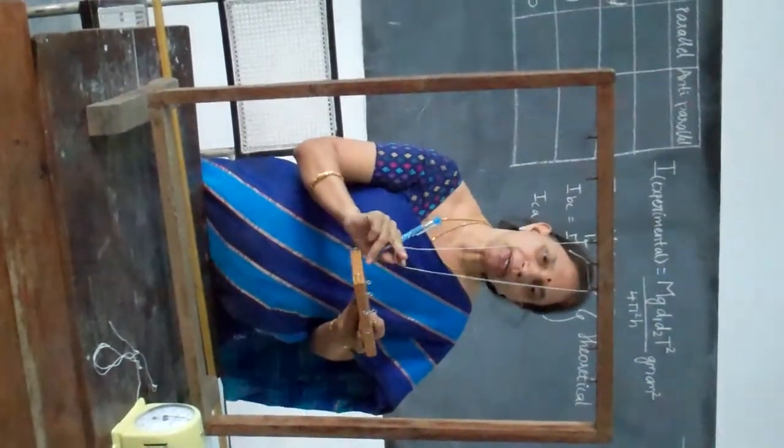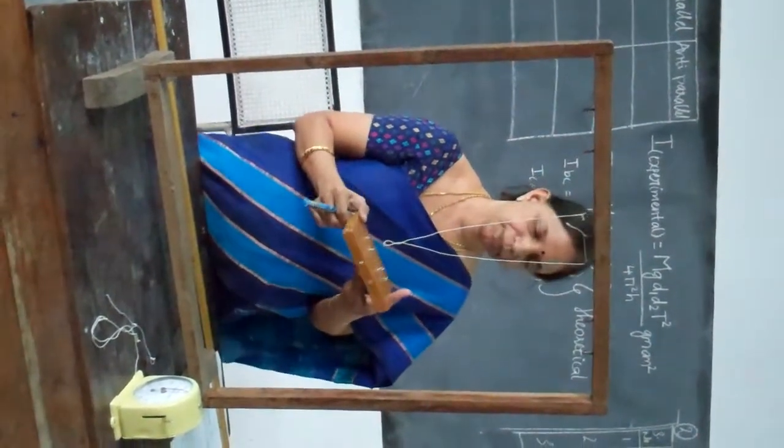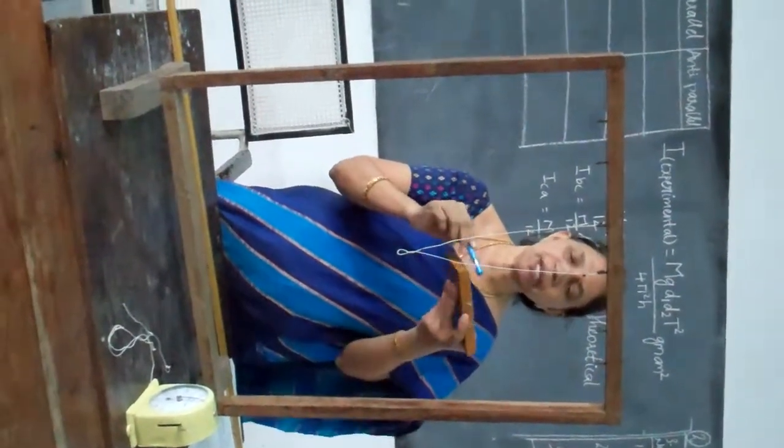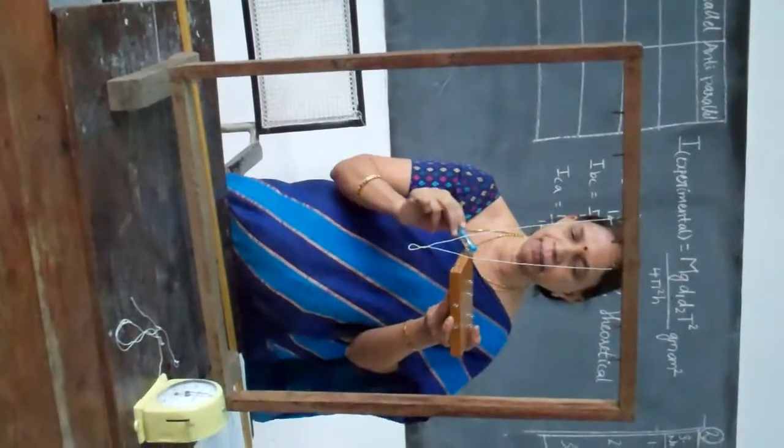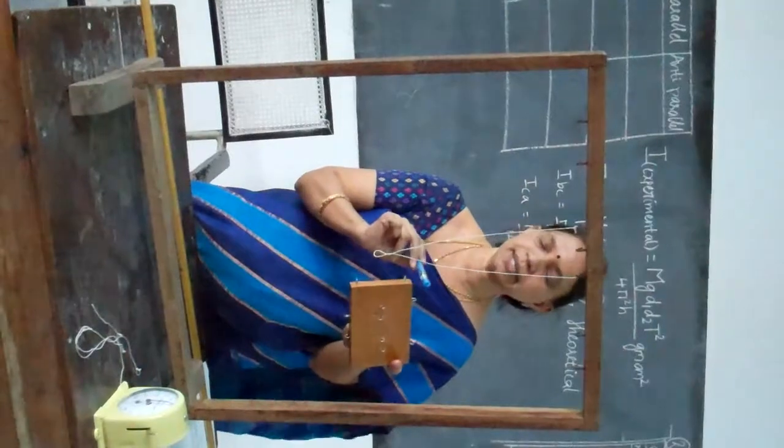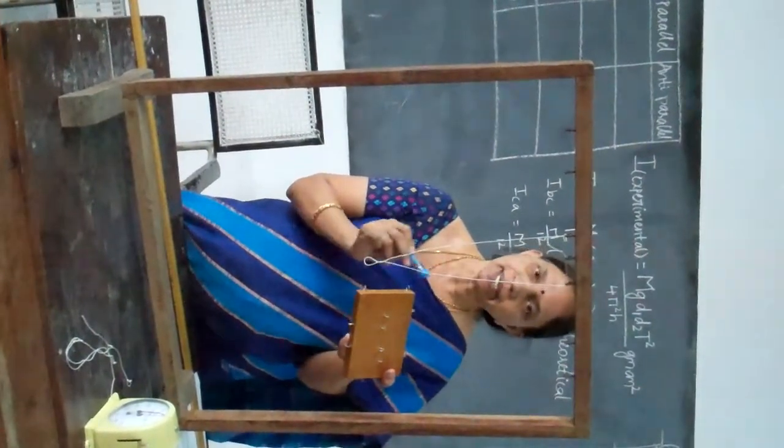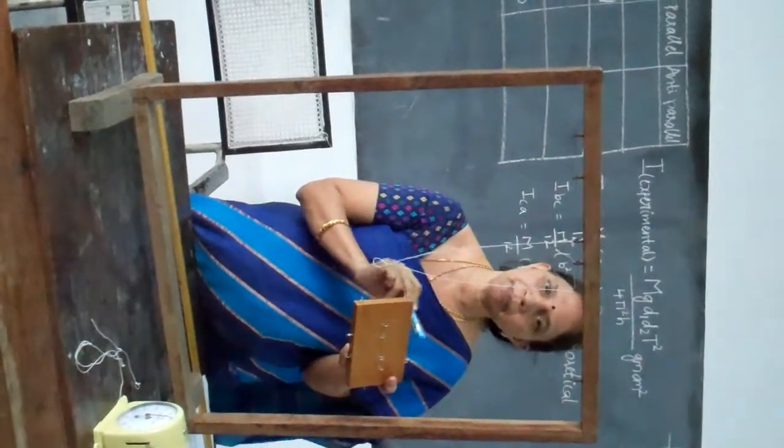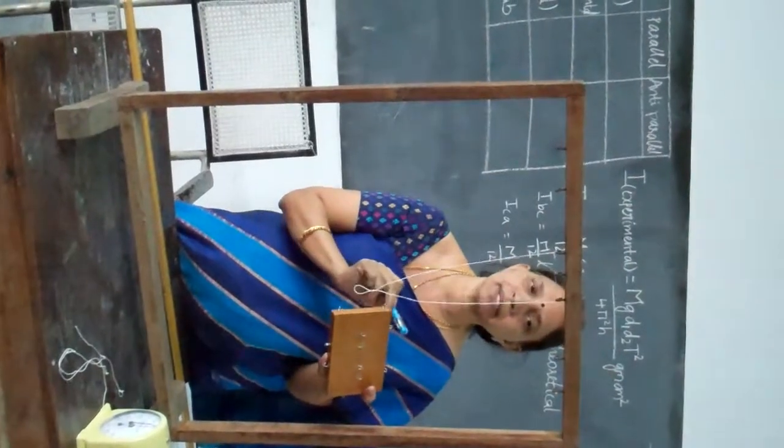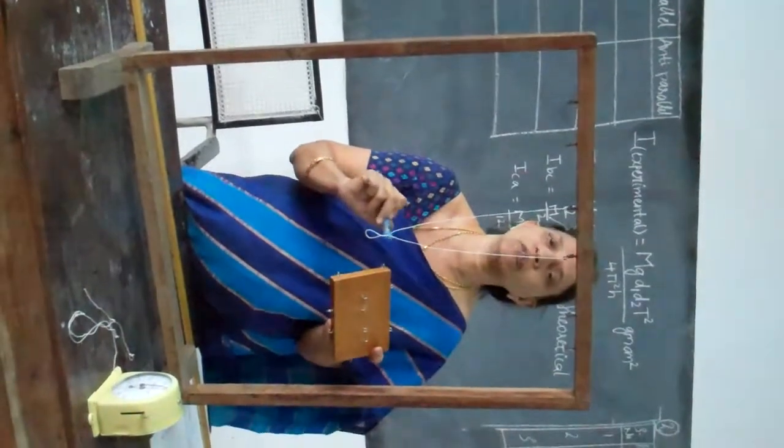And the second part of the experiment is to calculate, to verify perpendicular axis theorem. What is perpendicular axis theorem for a rectangular lamina? Moment of inertia about any plane, let us say AB plane, is equal to sum of the moments of inertia about BC and CA. So IAB is equal to IBC plus ICA. Similarly, IBC will be sum of IAB plus IAC. So IAC will be IAB plus IBC.